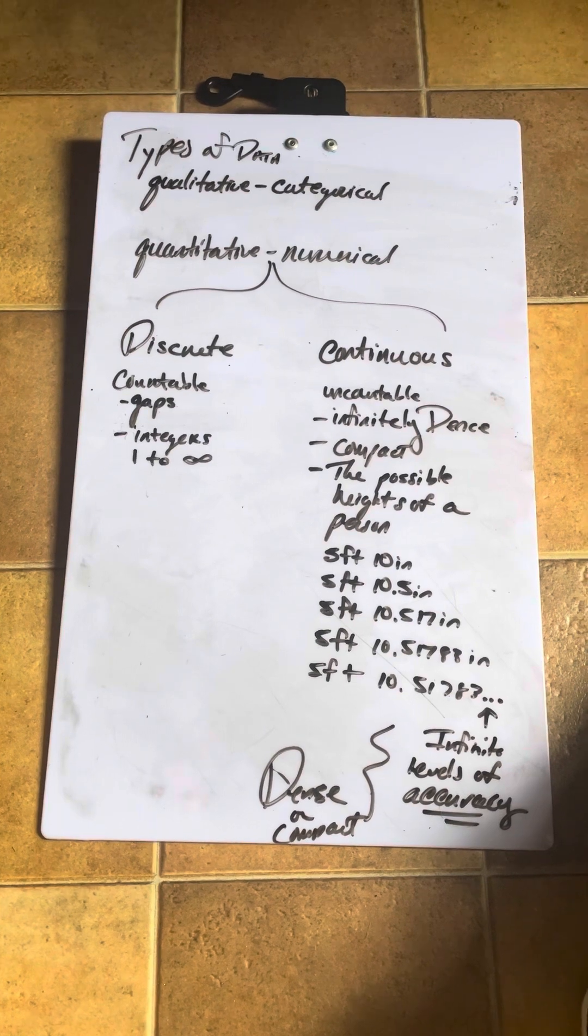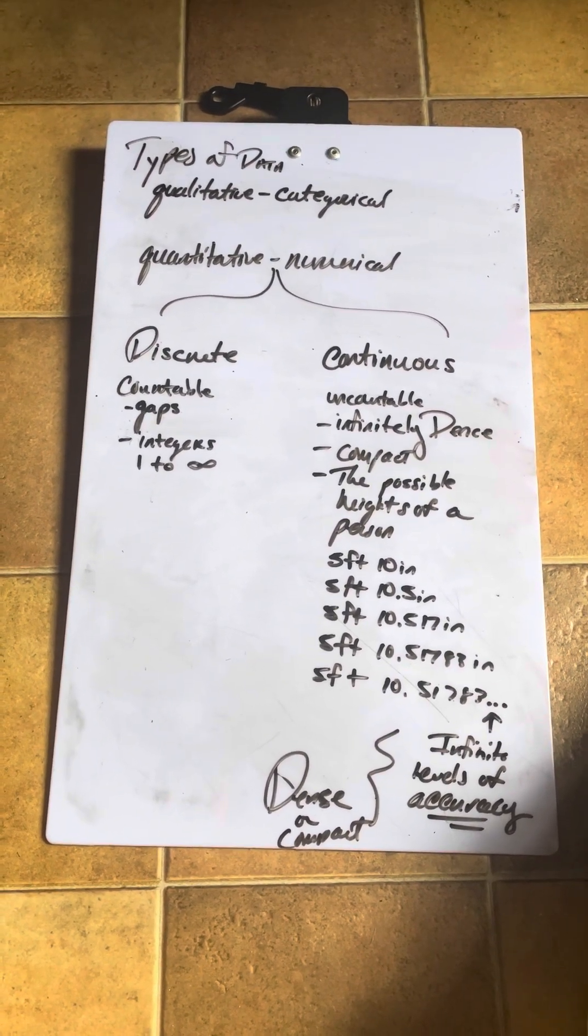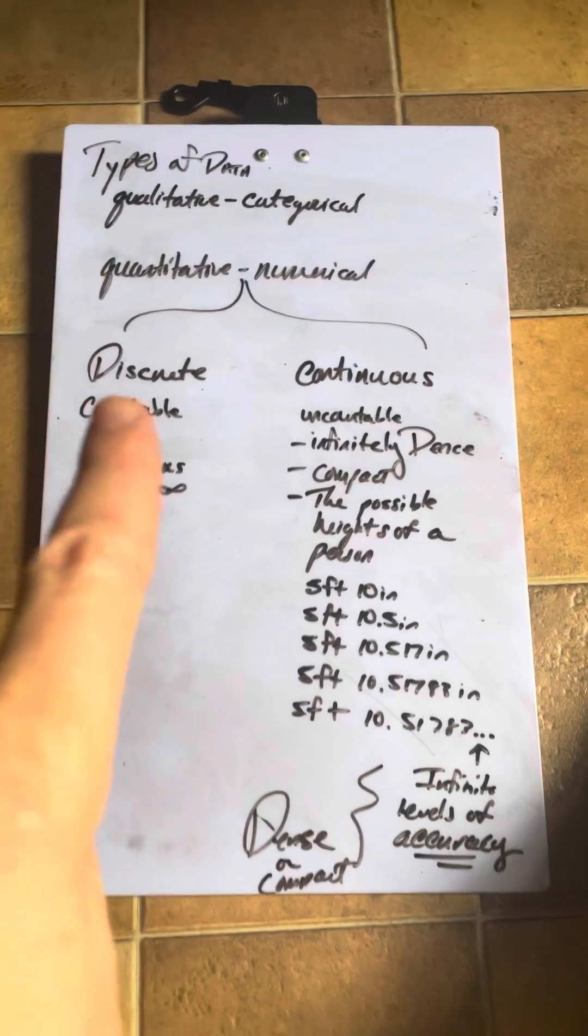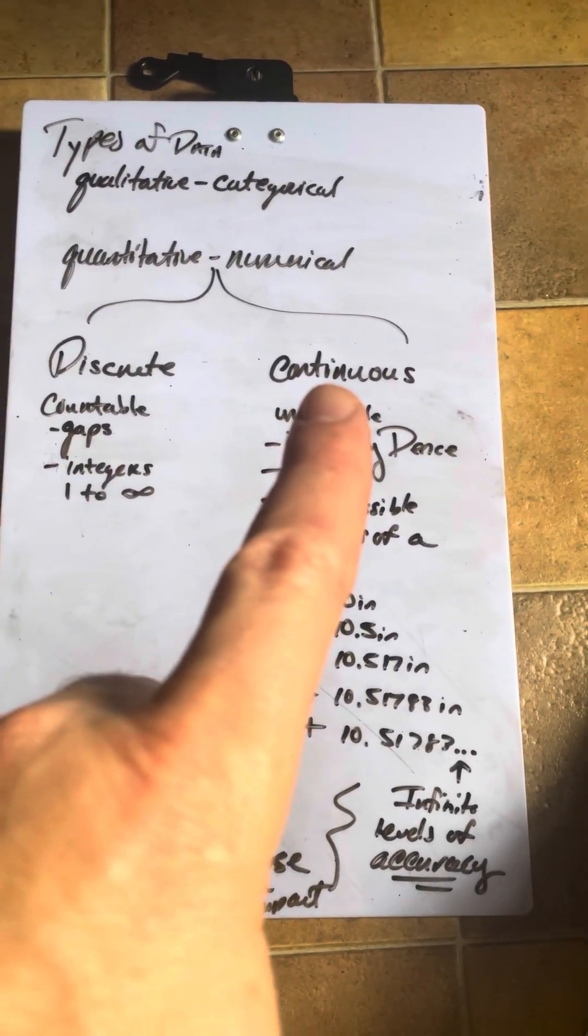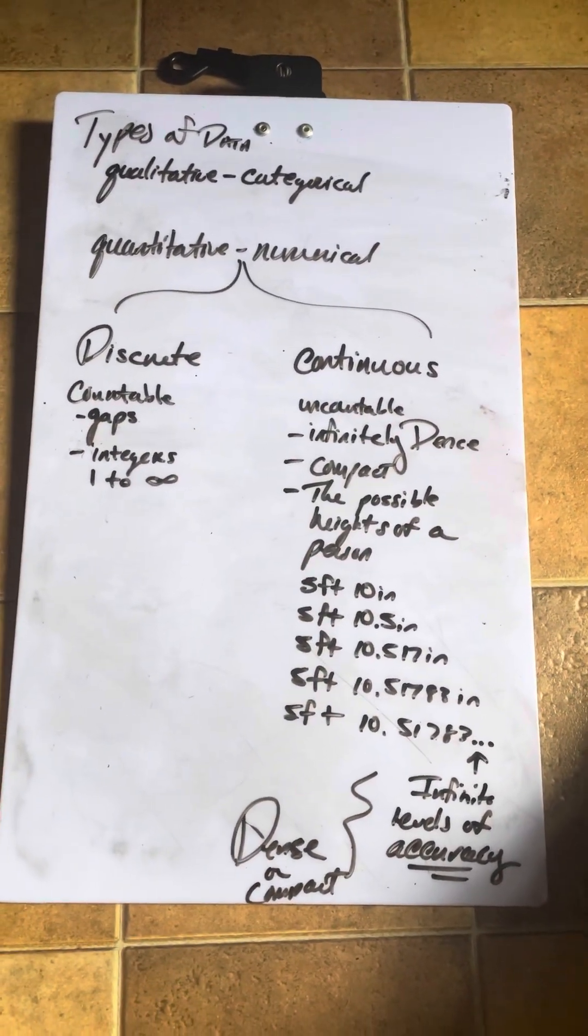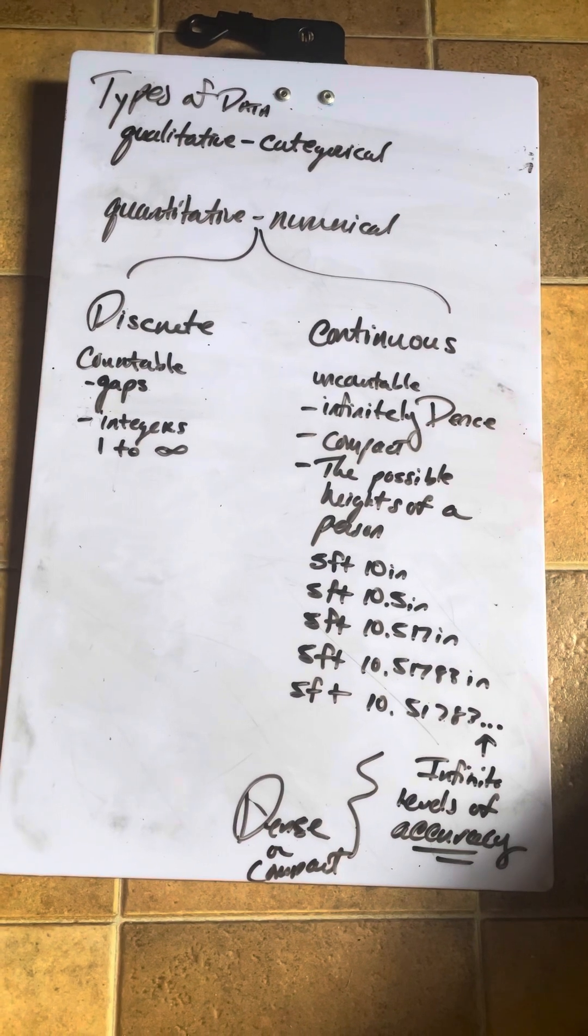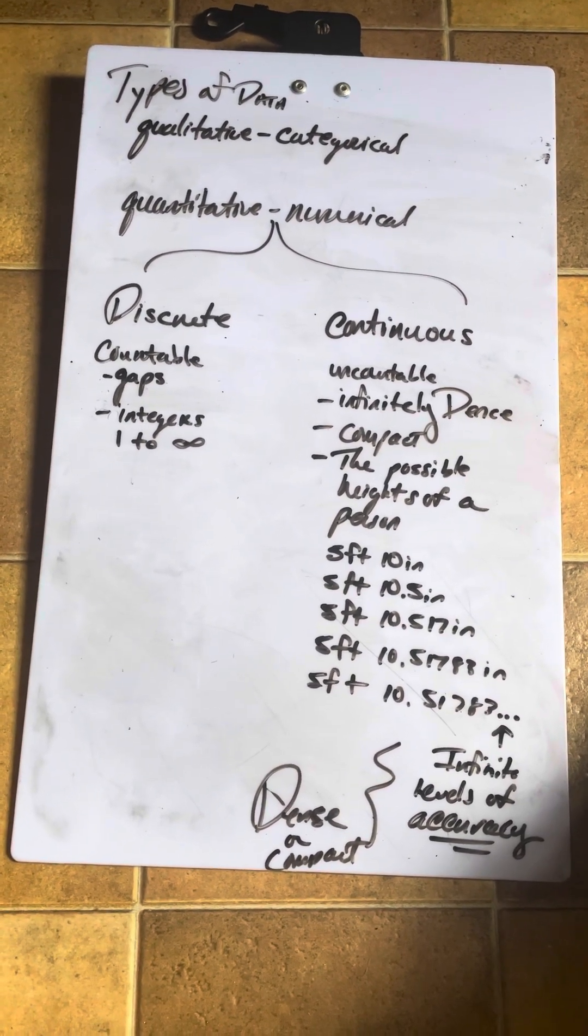Now talking about quantitative, there are two types of quantitative data. One is discrete and one is continuous. I'm going to give a bunch of adjectives to try and describe discrete as well as continuous and then I'm going to see if I can give you some examples.